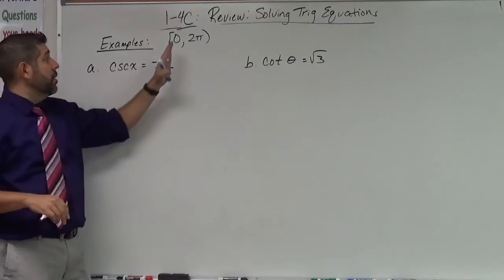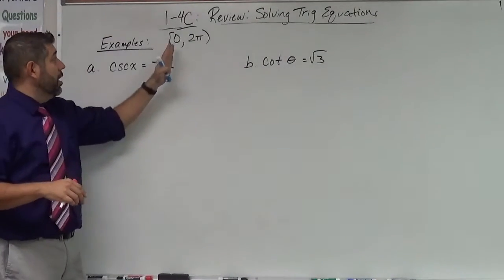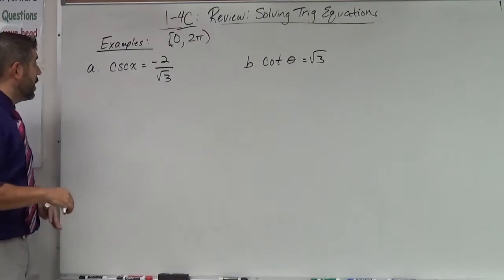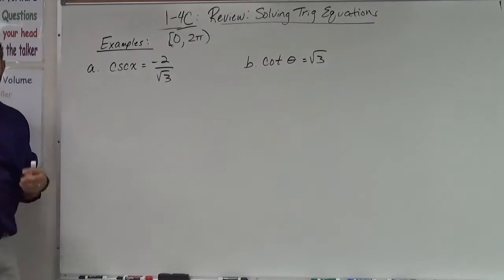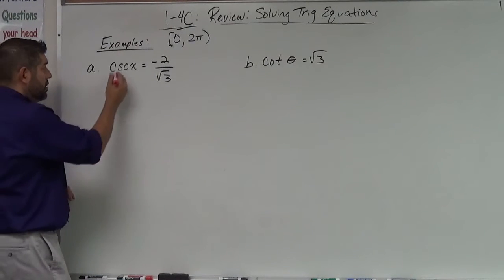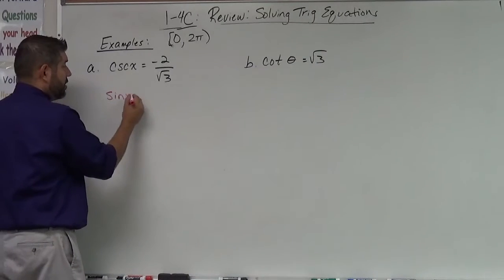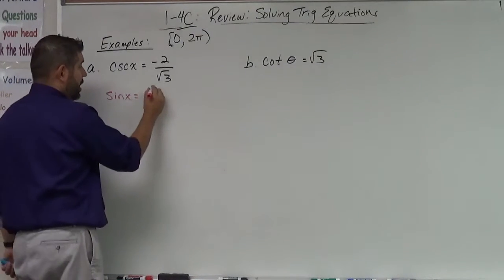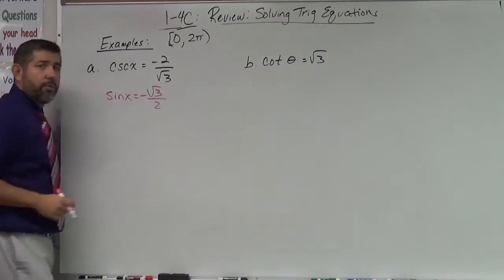I'm going to solve these for all the examples I do in this video from zero to two pi on that interval. So cosecant x equals negative two over root three. Remember that cosecant is one over sine. So this really is where is the sine of x, the reciprocal of that. So I'm looking at negative root three over two.